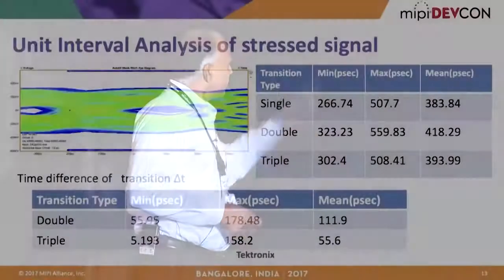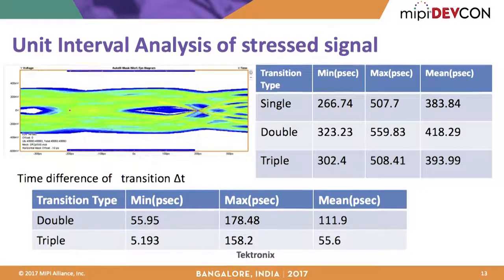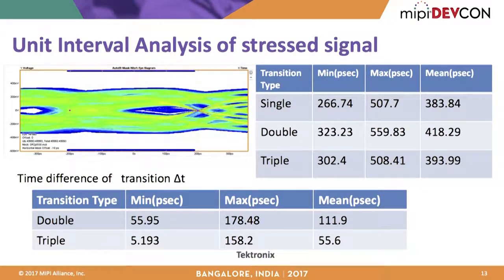When additional stress — such as ISI and jitter — is applied to the C-PHY signal, the delta T between two successive transitions increases to a maximum of 178 picoseconds and 158 picoseconds for double and triple transitions respectively. This directly impacts minimum UI availability: the minimum UI drops from 400 picoseconds to 266 picoseconds for single transitions and 323 picoseconds for double transitions.